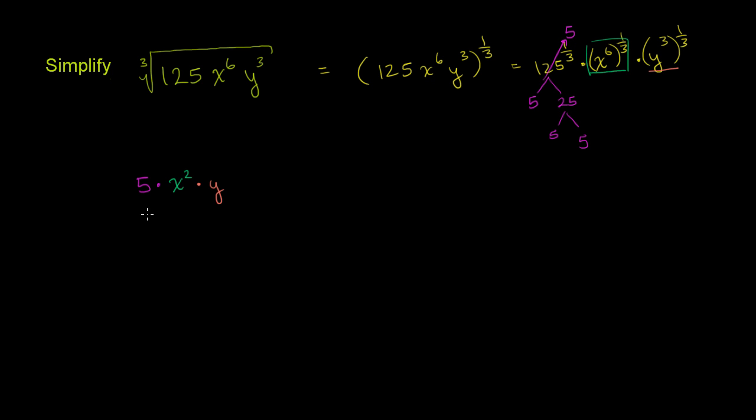And we are done. If you don't want to write the multiplication symbol, you can just write this as 5x squared y. And we have simplified.